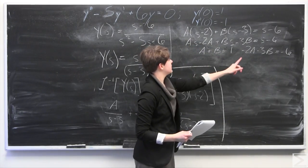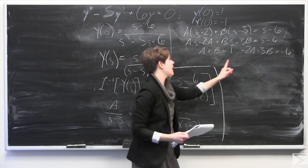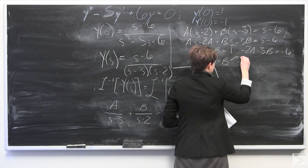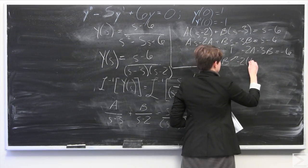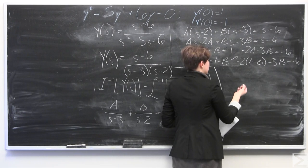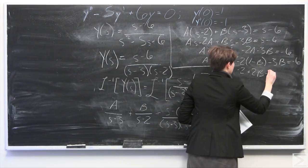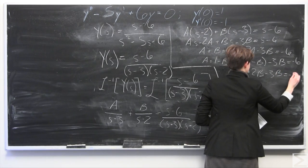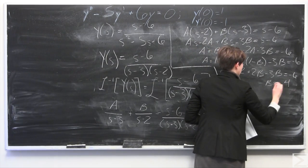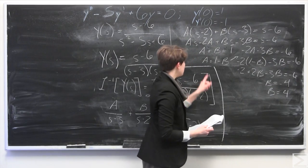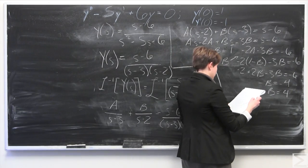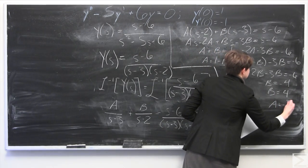To solve this system of equations, I'll first solve for A: A equals 1 minus B. Plugging in, we get negative 2 times 1 minus B, minus 3B equals negative 6. Multiplying out: negative 2 plus 2B minus 3B equals negative 6, so negative B equals negative 4, therefore B equals 4. And since A equals 1 minus B, we get A equals 1 minus 4 equals negative 3.